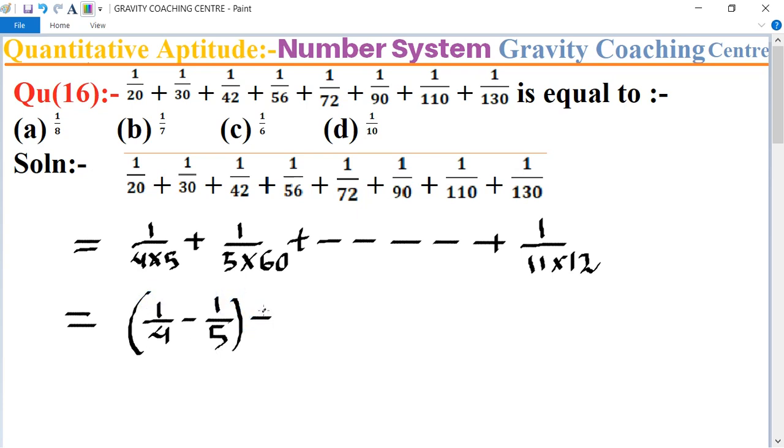Plus 1/5 minus 1/6, plus dot dot dot to 1/11 minus 1/12. So equal to, here 1/5 and 1/5 cancel.